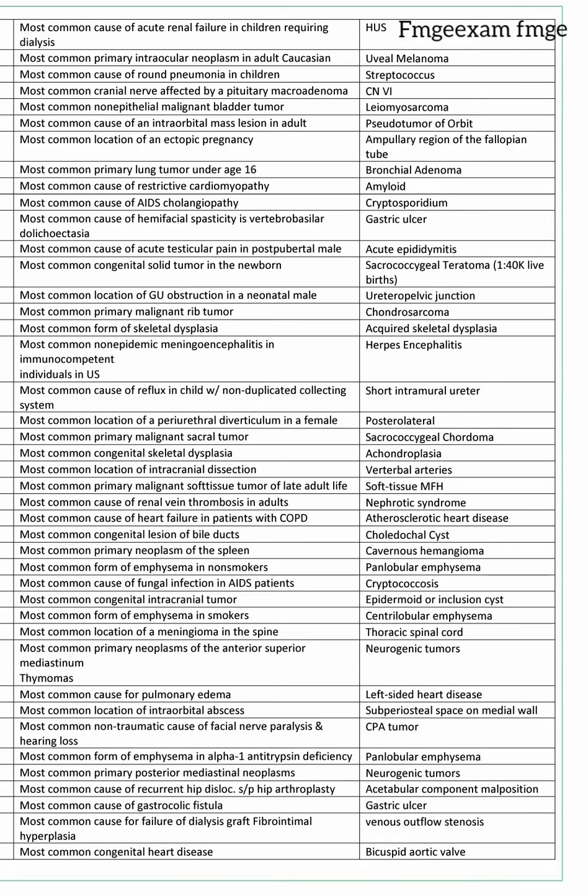Most common congenital skeletal dysplasia is achondroplasia. Most common location of intracranial dissection is the vertebral arteries. Most common primary malignant soft tissue tumor in late adult life is soft tissue MFH (malignant fibrous histiocytoma). Most common cause of renal vein thrombosis in adults is nephrotic syndrome.